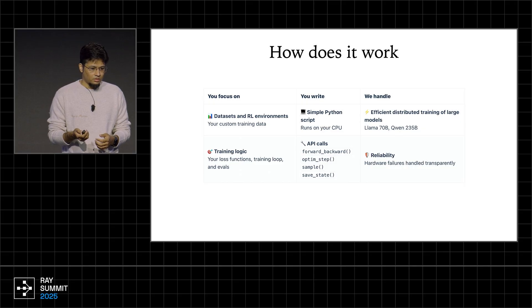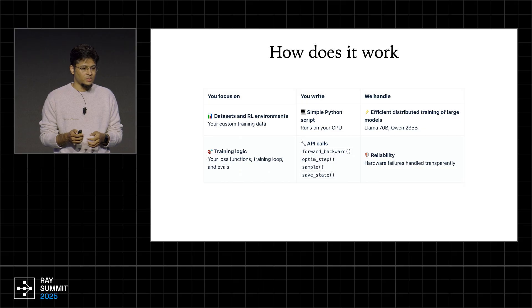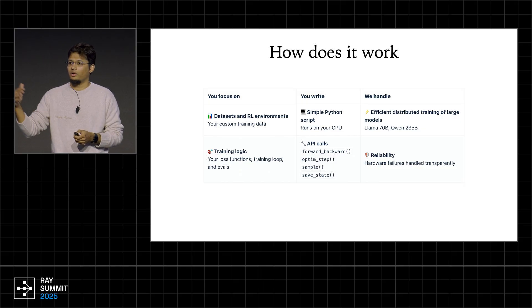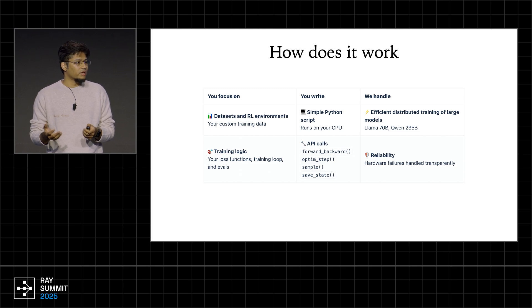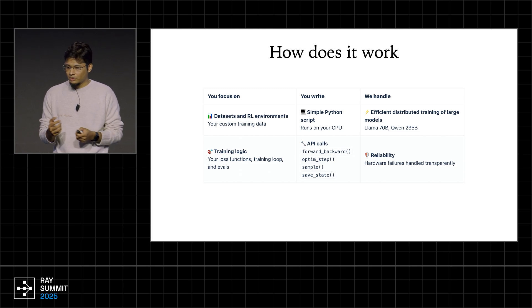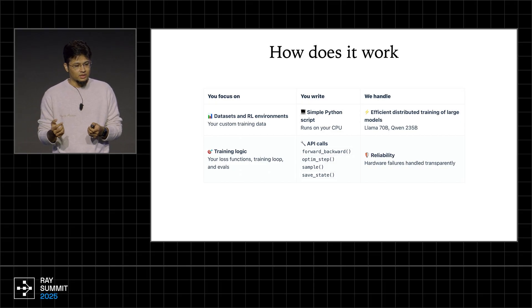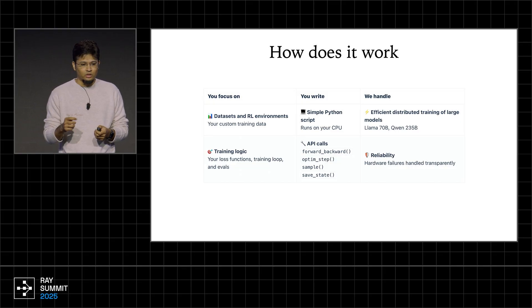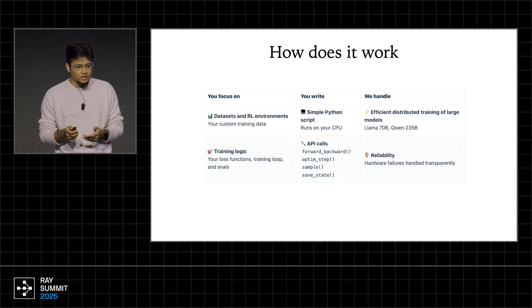The way it works is you focus on your training logic. You specify your training data or environment, your algorithm, loss functions, and hyperparameters. You write a simple Python script that runs on your laptop, on your CPU — you don't need GPUs to run the script. You use these basic API calls like forward, backward, optimizer step, and so on to actually run the training. What Tinker does for you is it handles efficient distributed training of large models.